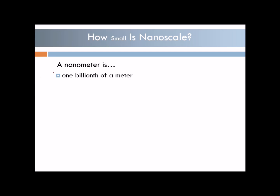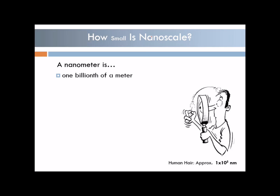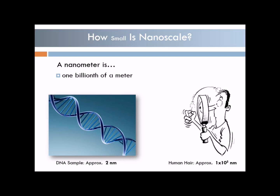So how small is the nanoscale? A nanometer is one billionth of a meter. For example, a DNA strand is approximately 2 nanometers wide, while a human hair is approximately 1×10⁵ nanometers wide.